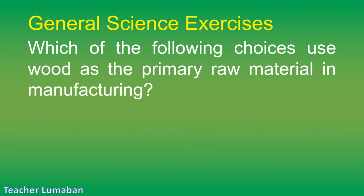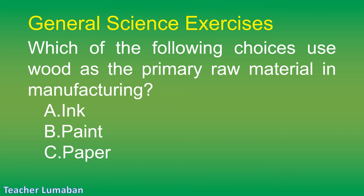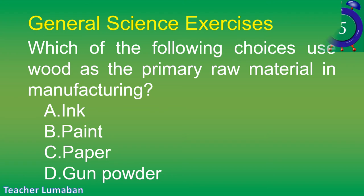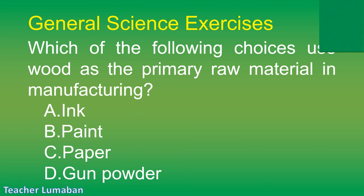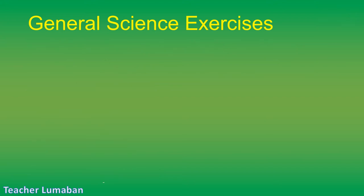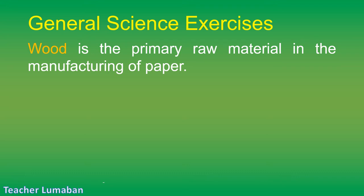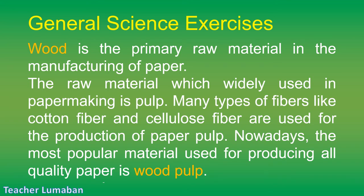Which of the following uses wood as the primary raw material in manufacturing? Letter A: ink. Letter B: paint. Letter C: paper. Letter D: gunpowder. The correct answer is Letter C: paper. Wood is the primary raw material in the manufacturing of paper. The raw material widely used in paper making is pulp. Many types of fibers like cotton fiber and cellulose fiber are used for the production of paper pulp. Nowadays, the most popular material used for producing all quality paper is wood pulp.